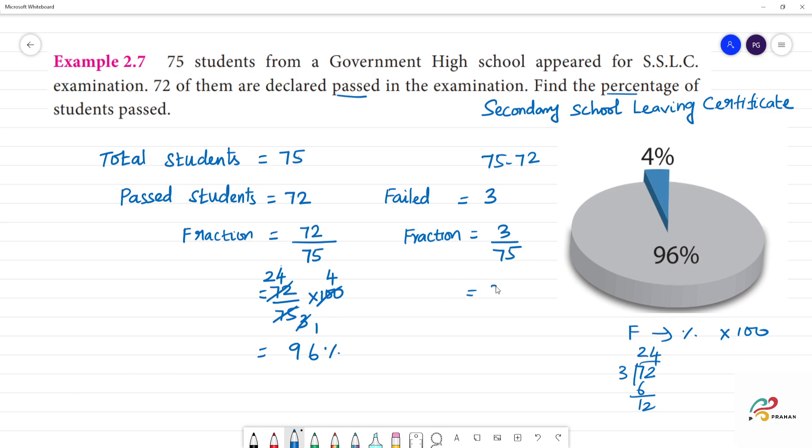Now 5 students are 3 by 75 into 100, right? Now, 75, 3 is 75, this is 4 times 25, this is 3, this is 3 cancel, this is 4 percentage.